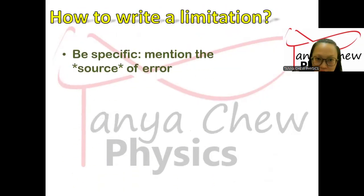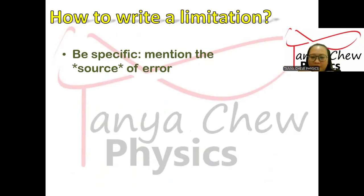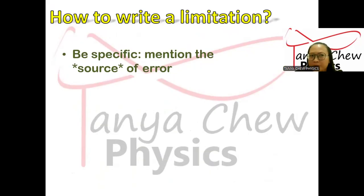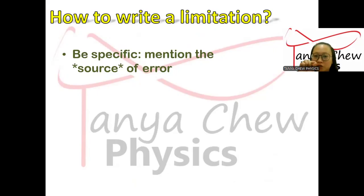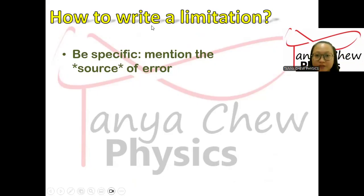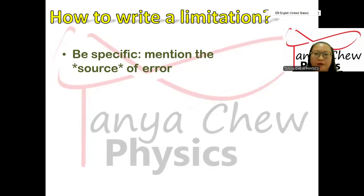Now, how to write a limitation. Whenever you write a limitation, make sure you are very specific — you have to mention the source of error. For example, if you are given a meter rule to measure the thickness of a wire, you know how thin a wire is. The correct apparatus you should use is a micrometer screw gauge, but if there is none available, you have no choice but to use the meter rule. So you could write: the thickness of the wire could not be measured accurately by a meter rule. That is one of your limitations. Always be specific.